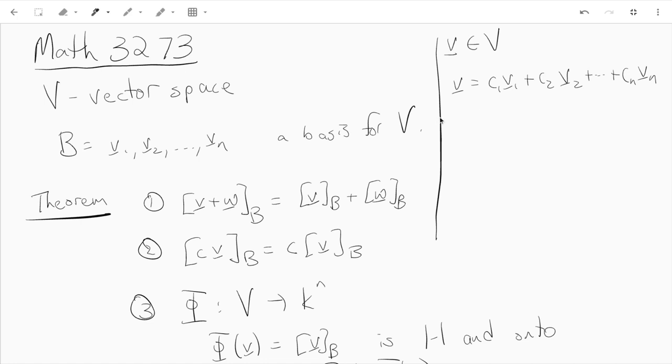Now we know every vector has a unique representation in this way and so that gives us a way. We just define the coordinate vector of V relative to B - you just put the scalars in a column vector wherever the scalars live. That gives you a column vector in K^n.